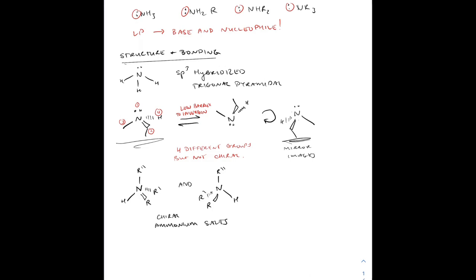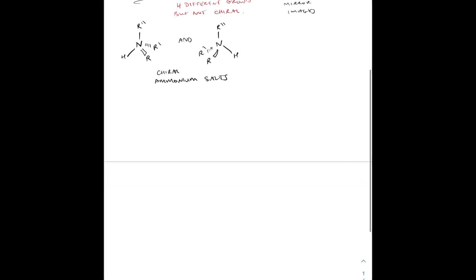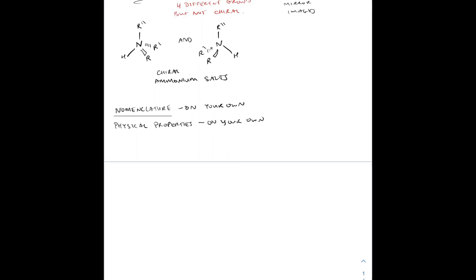That being said, we can have chiral ammonium salts, because it's almost like a carbon — if you have four different groups on it, it's going to be tetrahedral and it's chiral. That's more just a fun fact. It might pertain to some specific types of problems, but not necessarily the reactivity.